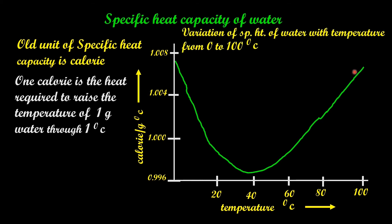So, this graph shows variation of specific heat capacity of water with temperature from 0 to 100 degrees Celsius.